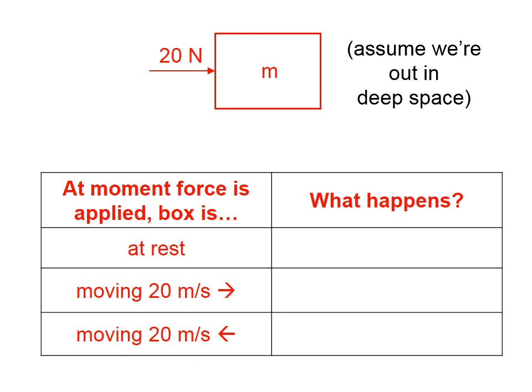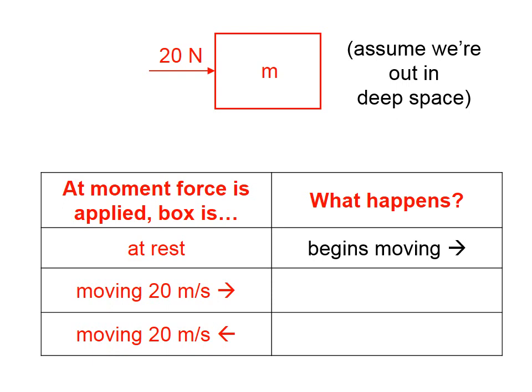Let's suppose we're out in deep space and there's a mass just floating out there, far from any planetary bodies, so there's no weight to speak of. We're going to apply a 20 Newton force from the left. At the moment the force is applied, if the box is at rest, it's going to start moving to the right. Suppose the box is already moving to the right at 20 meters per second — when we give it a push with the 20 Newton force, it will speed up.